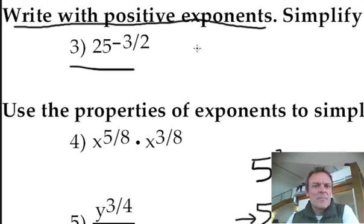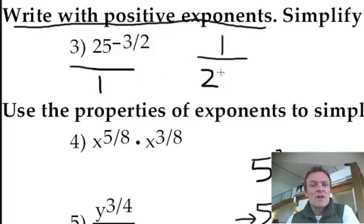25 to the negative 3 over 2. So if I write it like that, write it over 1. It's going to be 1 over 25 to the positive 3 over 2.